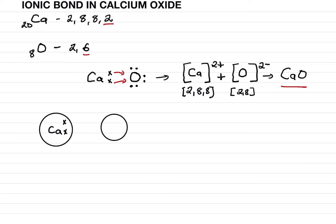We put oxygen in the center. How many electrons does it have? Six. So we put dots: one, two, three, four, five, six. Then we show with an arrow the transfer of electrons.